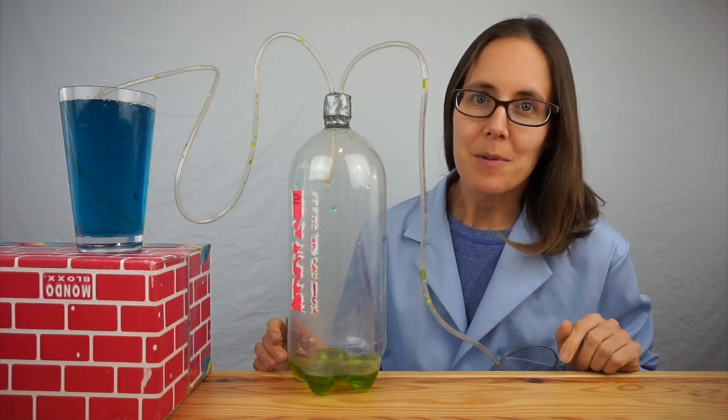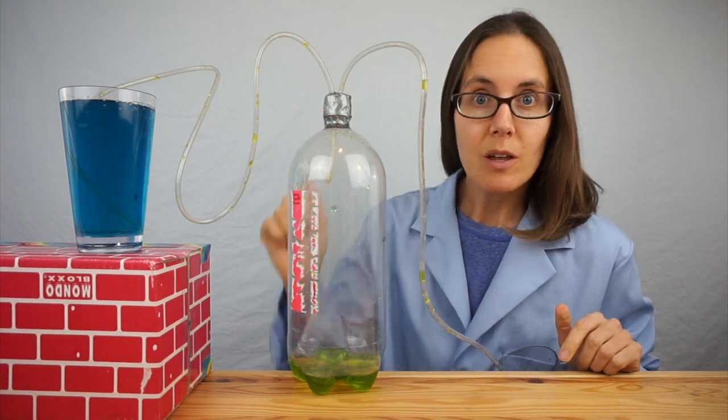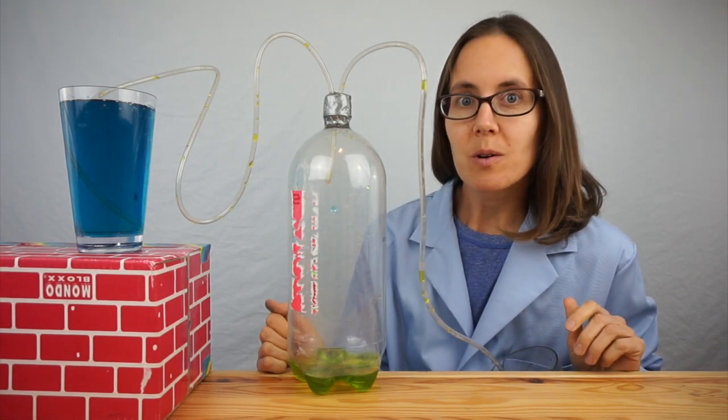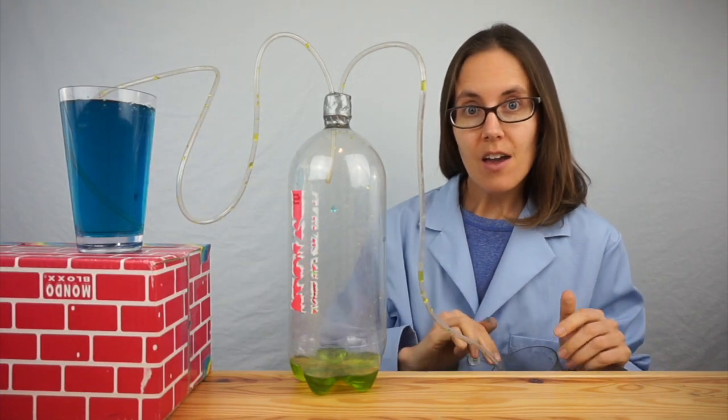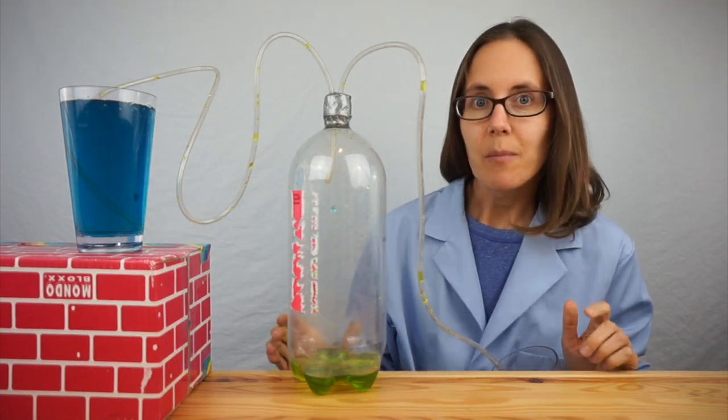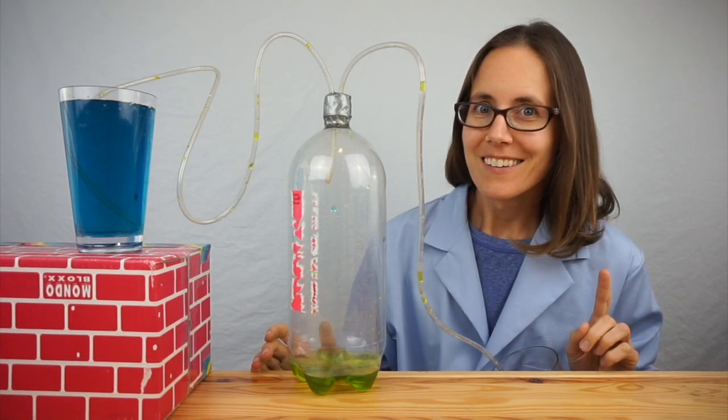Our last activity is fountain in a bottle. I drilled two holes into the lid of this bottle and then I put tubing through and secured it with duct tape so that it would be airtight. I have one end going to my fill cup here, the other end going down here to a drainage cup. And all I need to do to start the fountain is flip it over. Watch this.